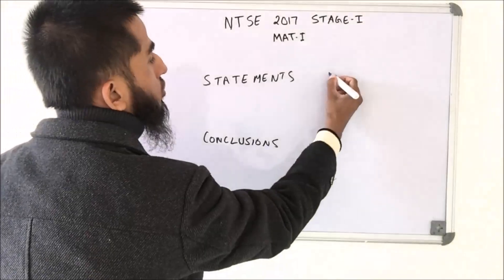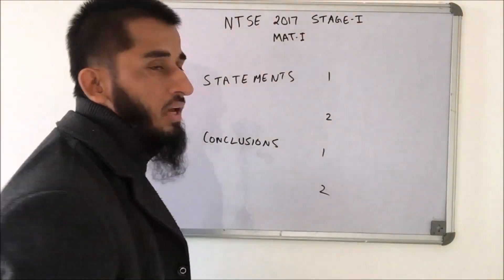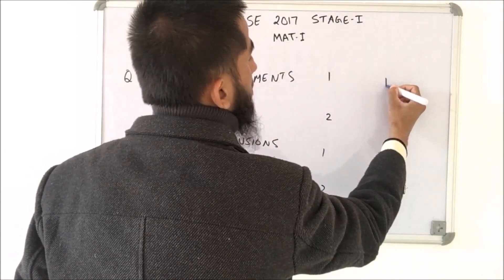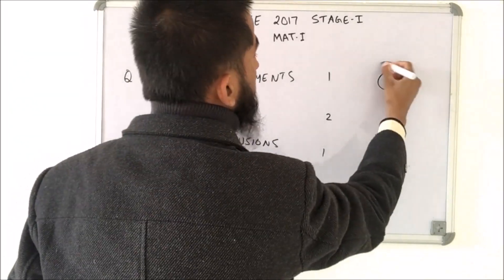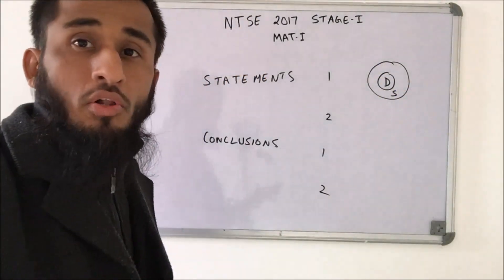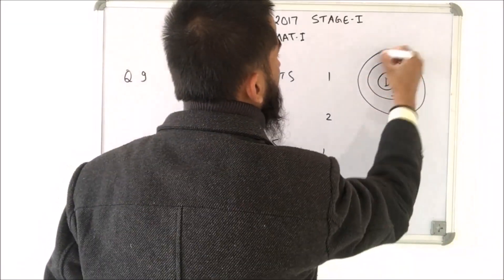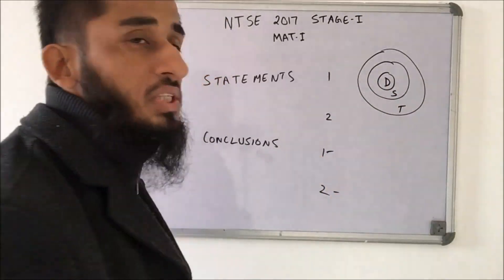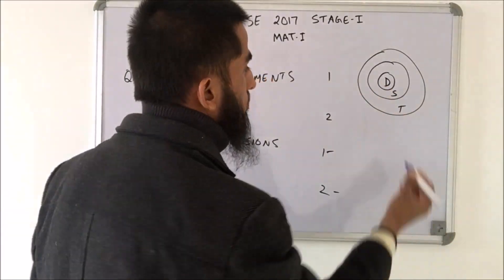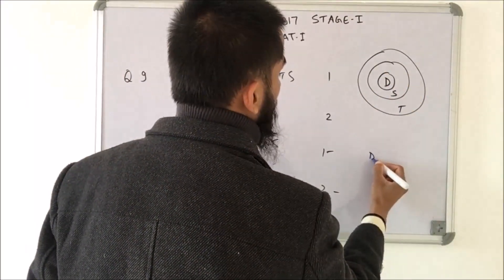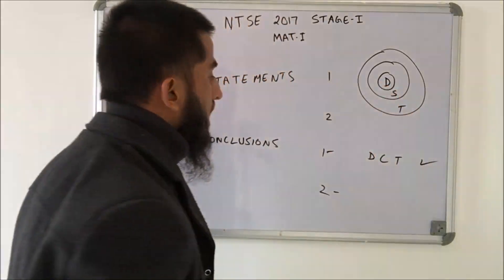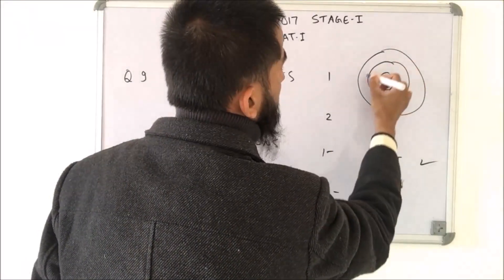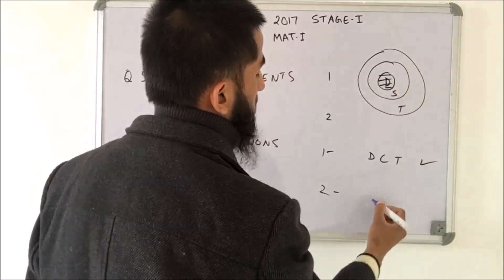In this question we have 2 statements and 2 conclusions. The first statement says all dancers are singers, so we have a bigger set of singers. And all singers are teachers, so we have a bigger set of teachers. Now conclusion one says all dancers are teachers — which is true because dancers are a subset of teachers. Conclusion two says some singers are dancers — which is also true because some singers overlap with the dancers set.